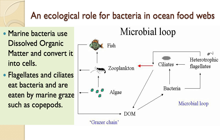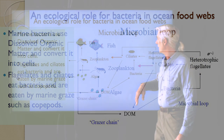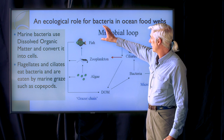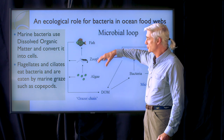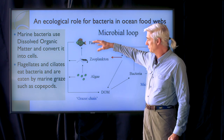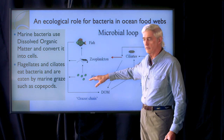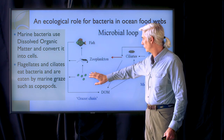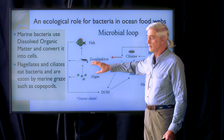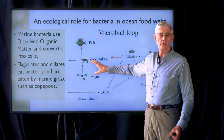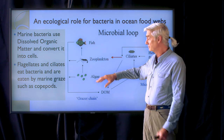The normal food chain that we think about in the ocean, we're mostly paying attention to fish that are consuming smaller fish and zooplankton that are then consuming the photosynthetic algae.